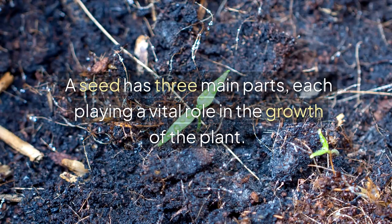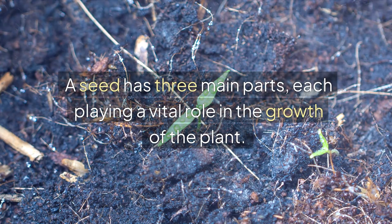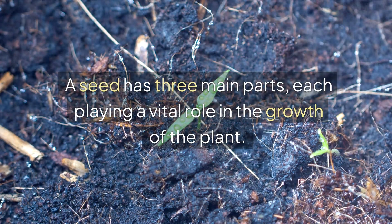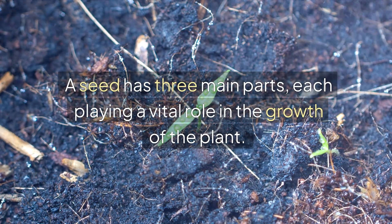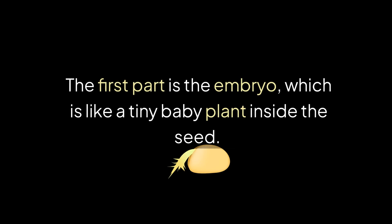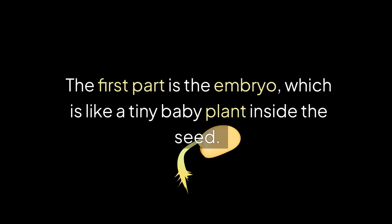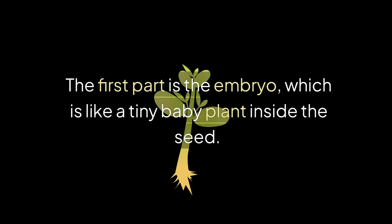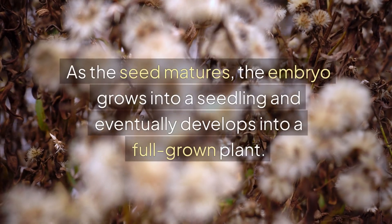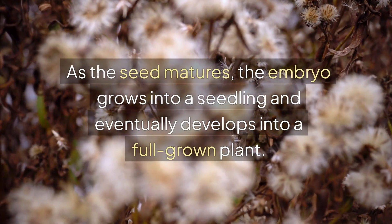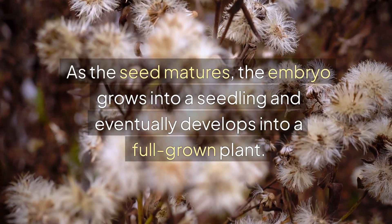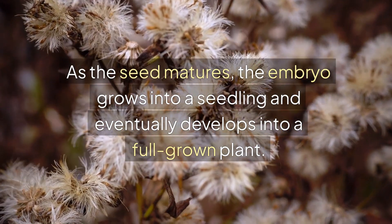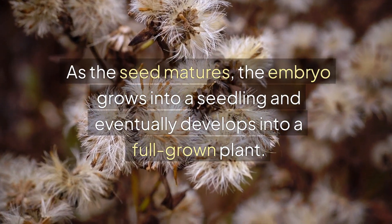A seed has three main parts, each playing a vital role in the growth of the plant. The first part is the embryo, which is like a tiny baby plant inside the seed. As the seed matures, the embryo grows into a seedling and eventually develops into a full-grown plant.